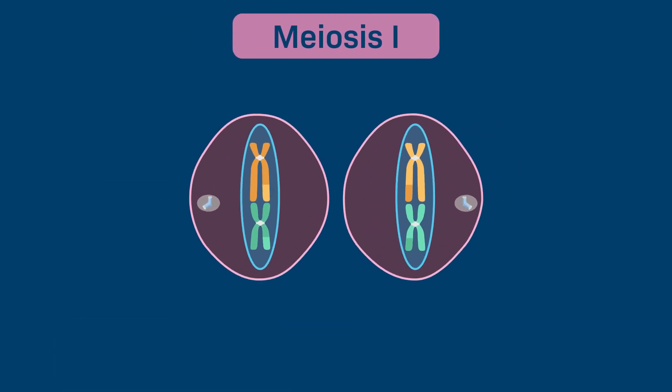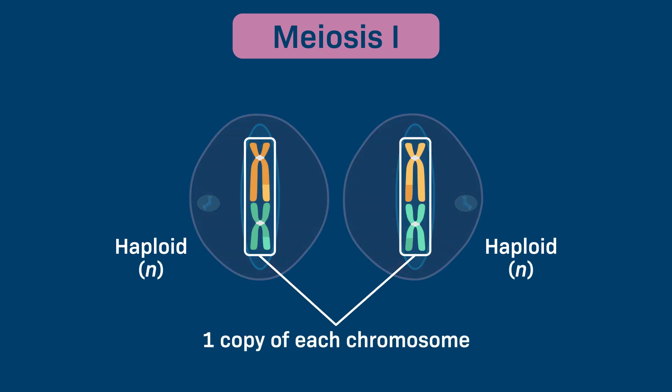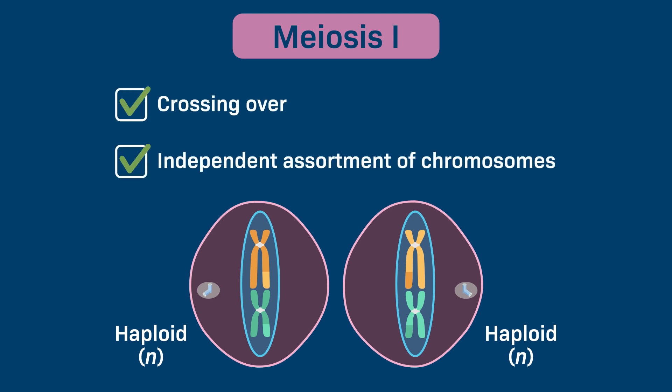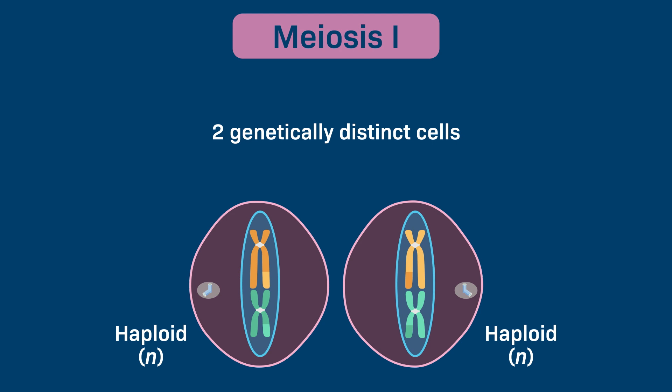The two cells that result from meiosis I are both haploid, which is designated as N, as they have one copy of each chromosome. Because of crossing over and the independent assortment of chromosomes during meiosis I, the two cells are genetically distinct from each other.